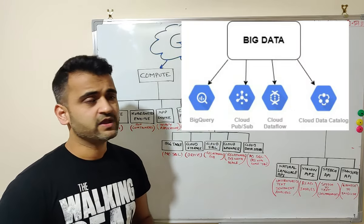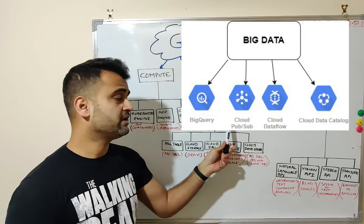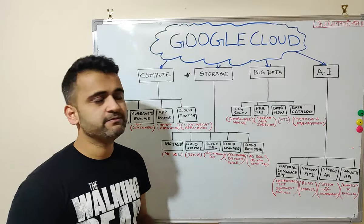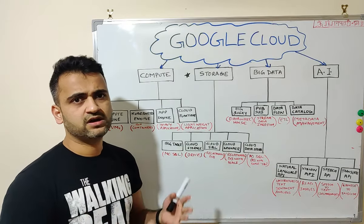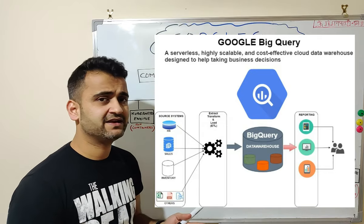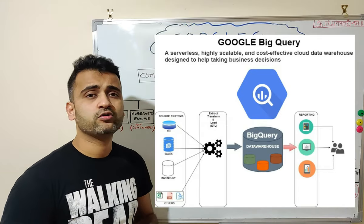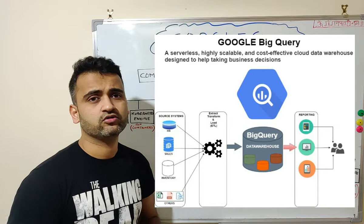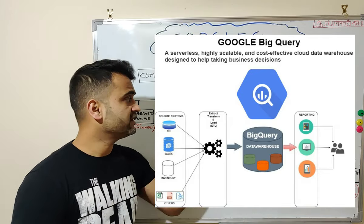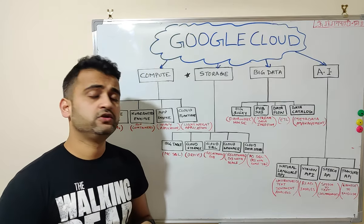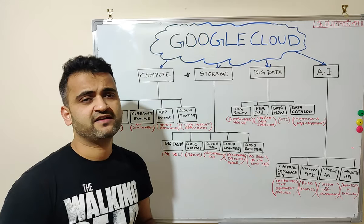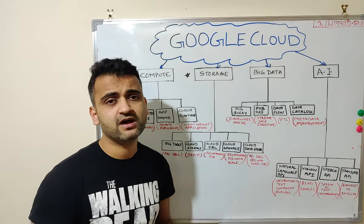Moving on, the next category is Big Data. The most famous product and USP of Google Cloud is BigQuery, which is Google Cloud Platform's data warehouse solution. You can run your data analytics, data loads, and store massive amounts of data in a data warehouse using BigQuery. Whatever data warehouse or data lake needs you have can be fulfilled by BigQuery.